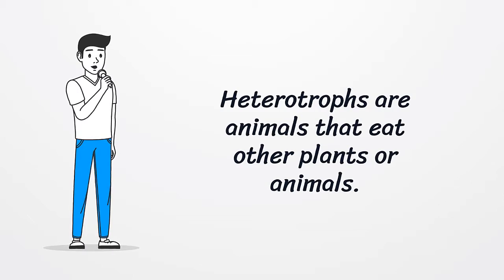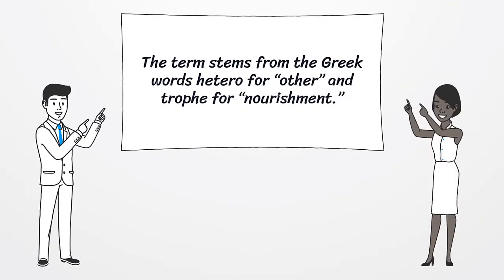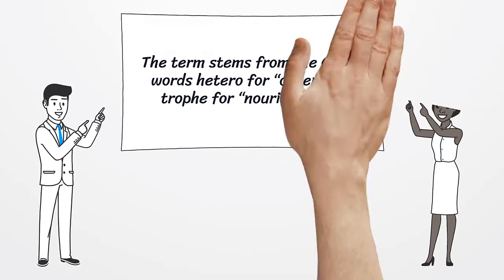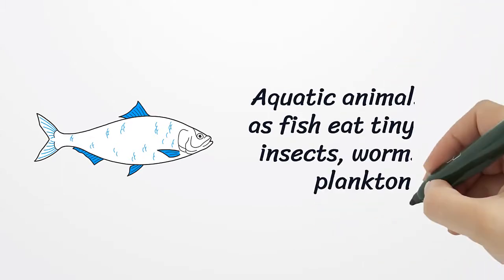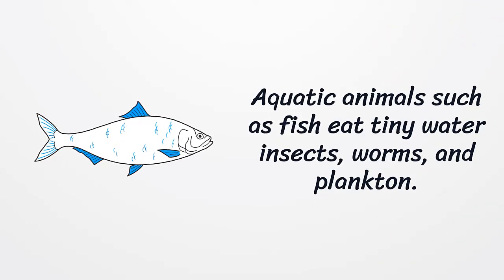Heterotrophs are animals that eat other plants or animals. The term stems from the Greek words hetero for other and trophe for nourishment. Aquatic animals such as fish eat tiny water insects, worms, and plankton.